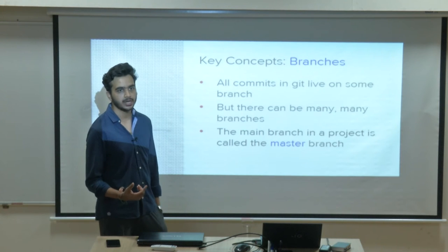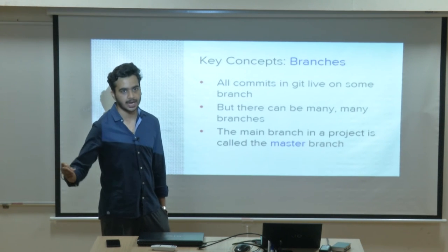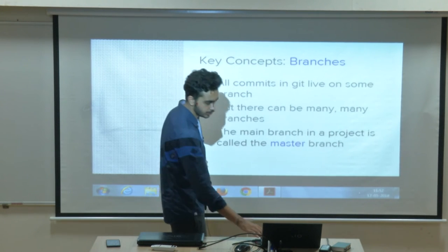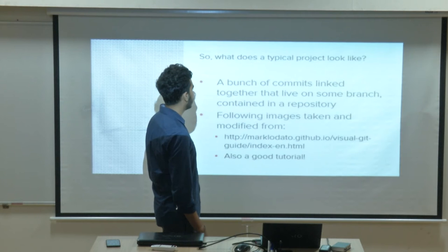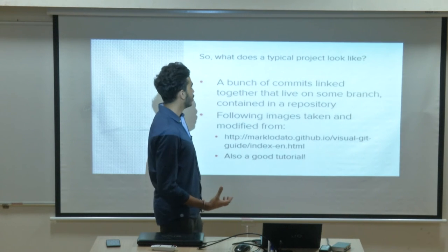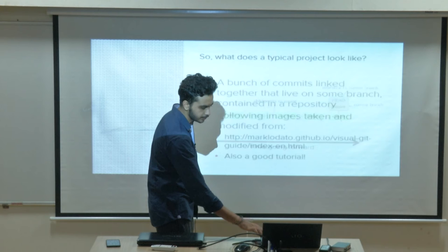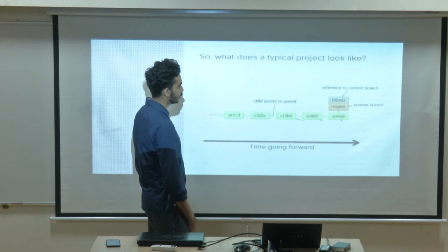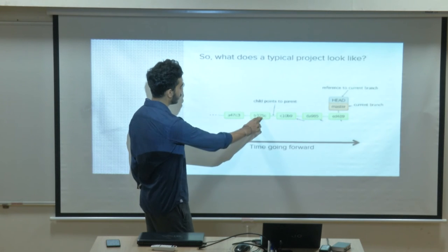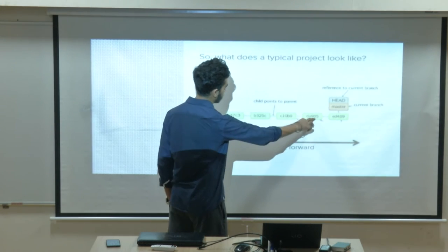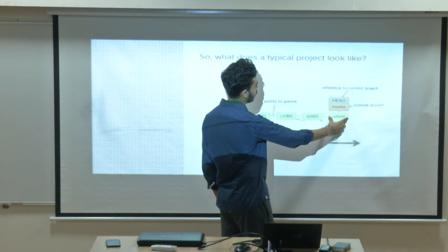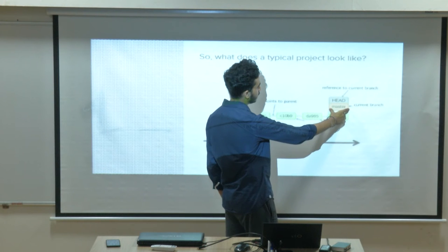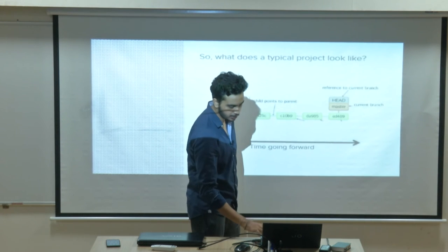Another branch can be a development branch or a feature branch. You create a new feature branch, work on it, and after you are sure it is working fine, you merge it into the master branch. Commits are nothing but a linked list kind of structure — each commit points to its parent commit. HEAD determines the position where you are right now, and master is the branch name, so you are at the head of your master branch.